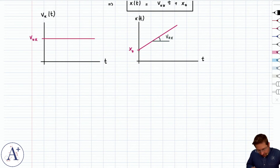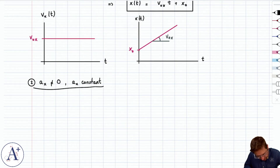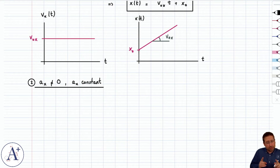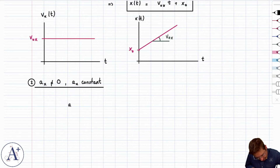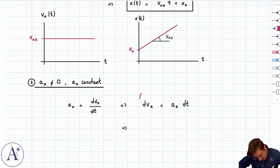Now let's look at the more general case where aₓ is non-zero but still constant. The assumption is that you have a constant acceleration that doesn't change, but it's non-zero. So if your acceleration is non-zero, your velocity is going to vary. We have to write that acceleration by definition is dvₓ/dt, so aₓ = dvₓ/dt.